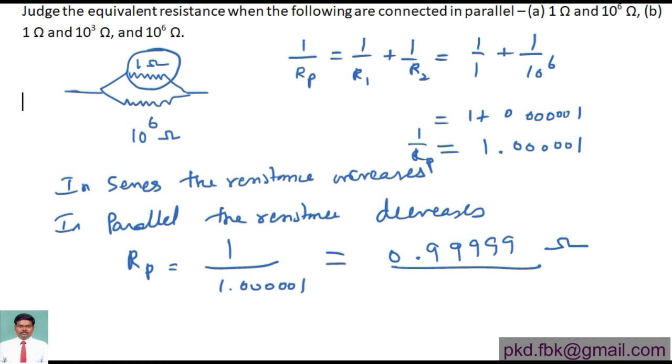You can see in the result that it will be less than the least resistance that is connected in parallel with the circuit. The answer for this question is that the equivalent resistance will always be less than 1. Similarly, the second combination we have 1Ω, 10³Ω, 10^6Ω - by seeing itself we can say 1Ω is the least resistance, so the resistance value I'm going to calculate should be less than 1Ω.